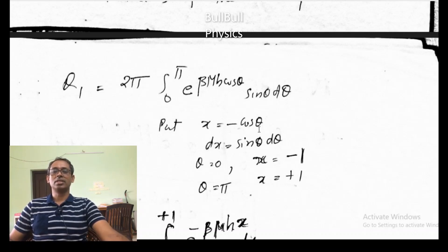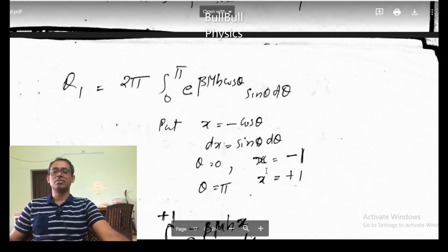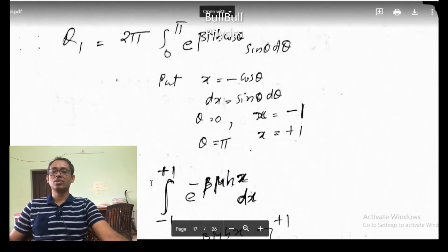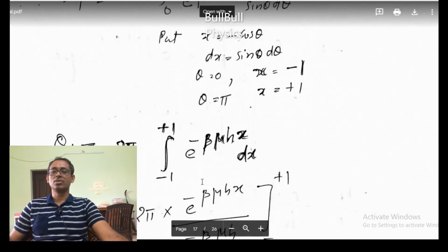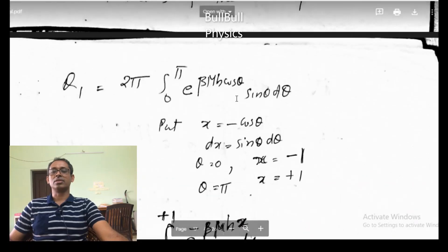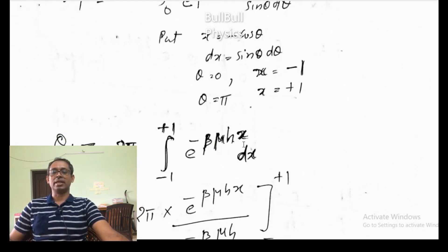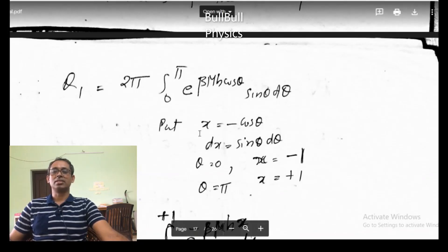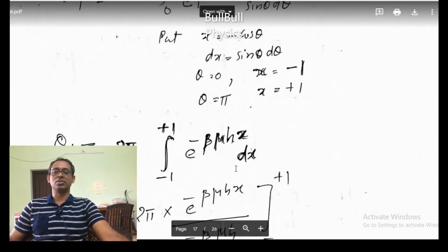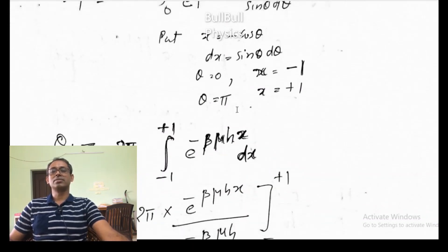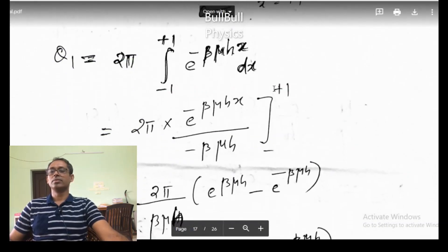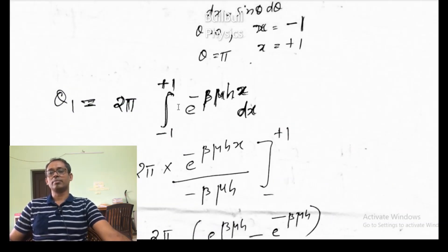When theta is 0, x is minus 1, and when theta is pi, x is plus 1. So we have 2 pi times the integral from minus 1 to plus 1 of e to the power minus beta mu H x dx, where instead of cos theta I write minus x. As I integrate this with respect to x, I get e to the power minus beta mu H x over (minus beta mu H) evaluated from minus 1 to plus 1.